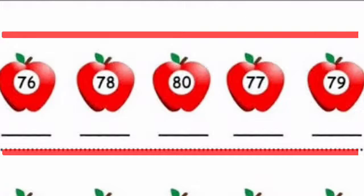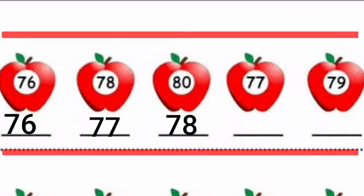Let's see which number will come in the first place. The smallest number is 76, so the number that will come first will be 76. The second number will be 77, then 78, after that 79, and the last number will be 80.